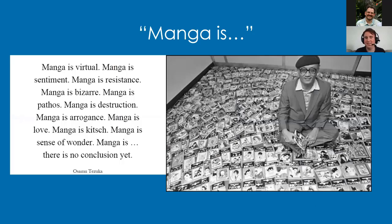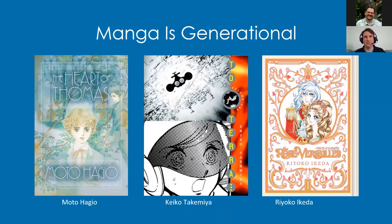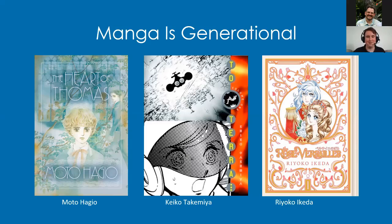From Tezuka's obituary: why do the Japanese love manga so much? One explanation is that they have weekly comic magazines for all different age groups. Manga is also generational. The Year 24 Group — women including Moto Hagio, Keiko Takamiya, and Ryoko Ikeda — created works like The Heart of Thomas, Toward Terra, and Rose of Versailles, pushing Shoujo and Josei comics into new boundaries: sci-fi, historical, even German boys' boarding school drama.